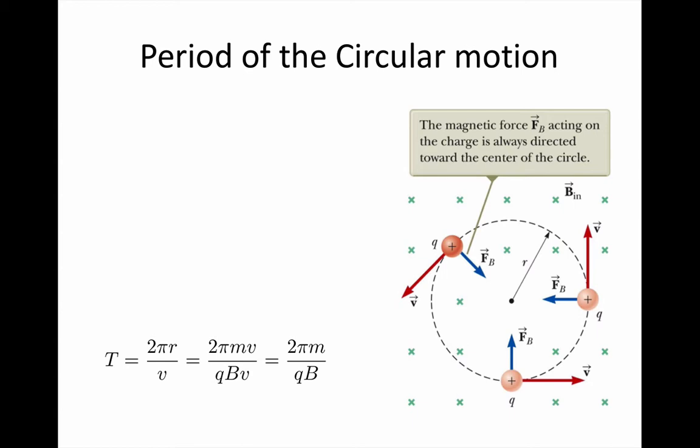So now substituting in for r, we have that the period is 2πmv over qBv. The v's cancel, so now we just have that the period T equals 2πm over qB.